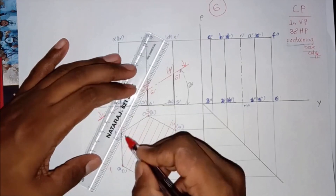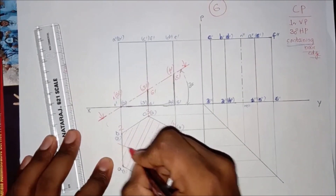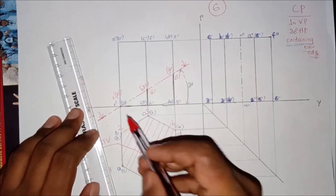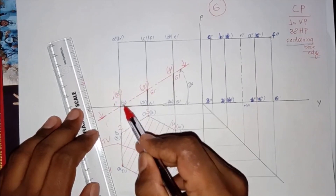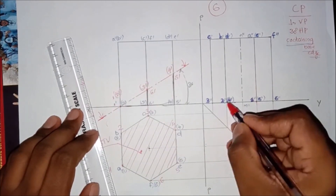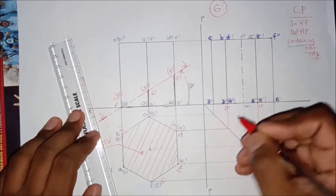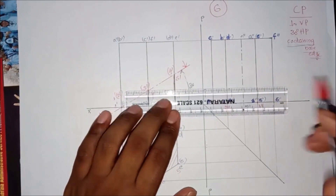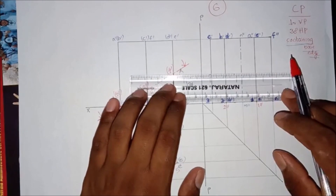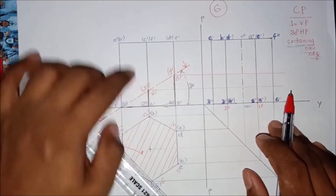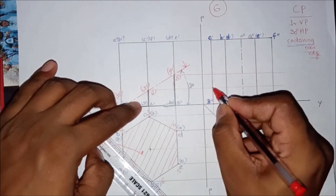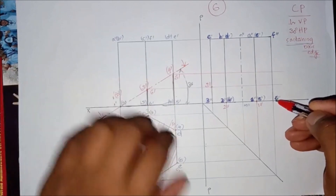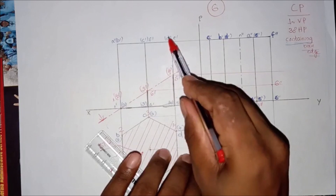Here is the section point for the sectional top view. This is the sectional top view; this side view is already done. Section point 1 is at 1, section point 2 is equal to 2, giving us 1-double-dash and 2-double-dash. Section point 3 is in between c and 3, so section point 3 and 6 are transferred.